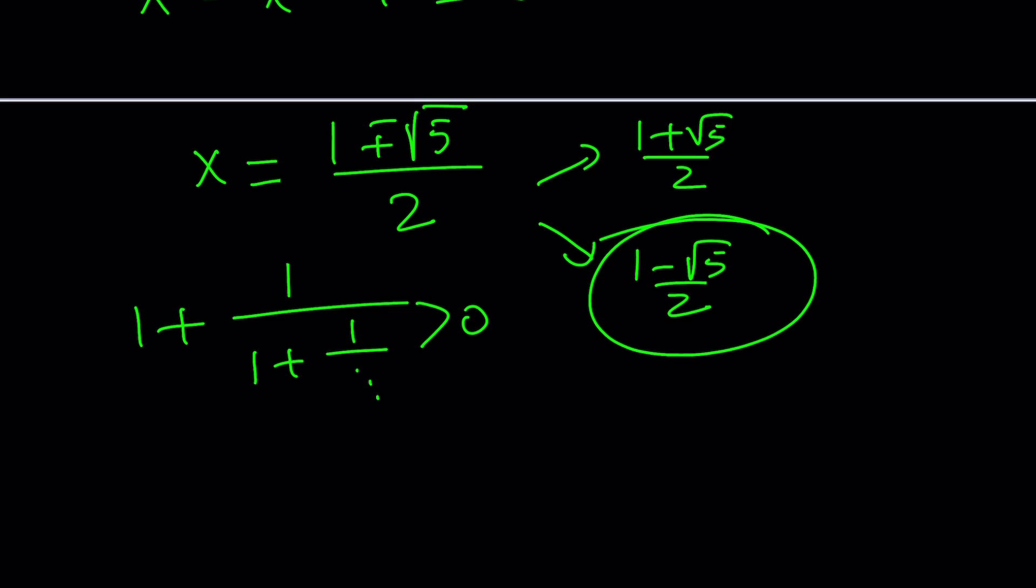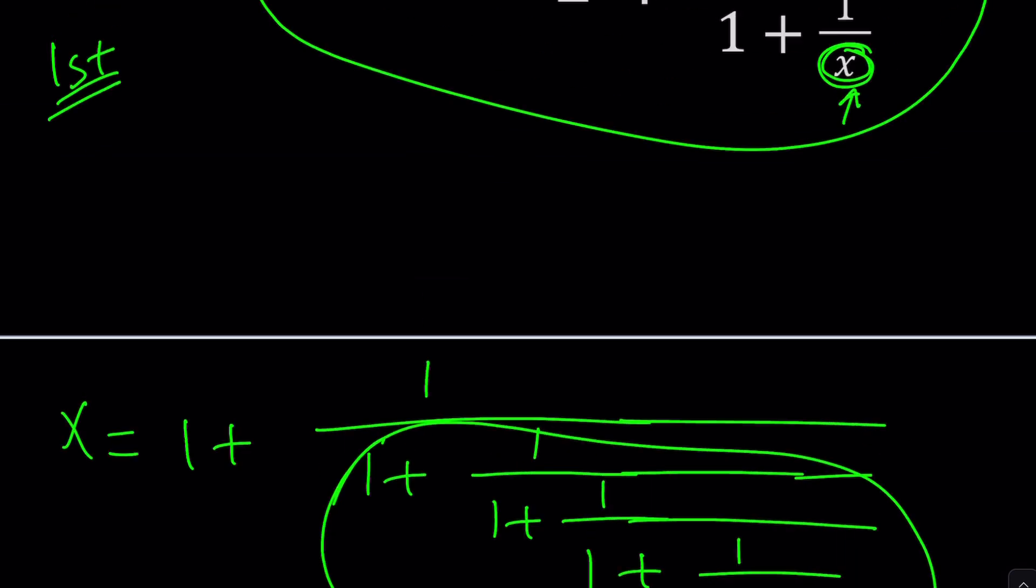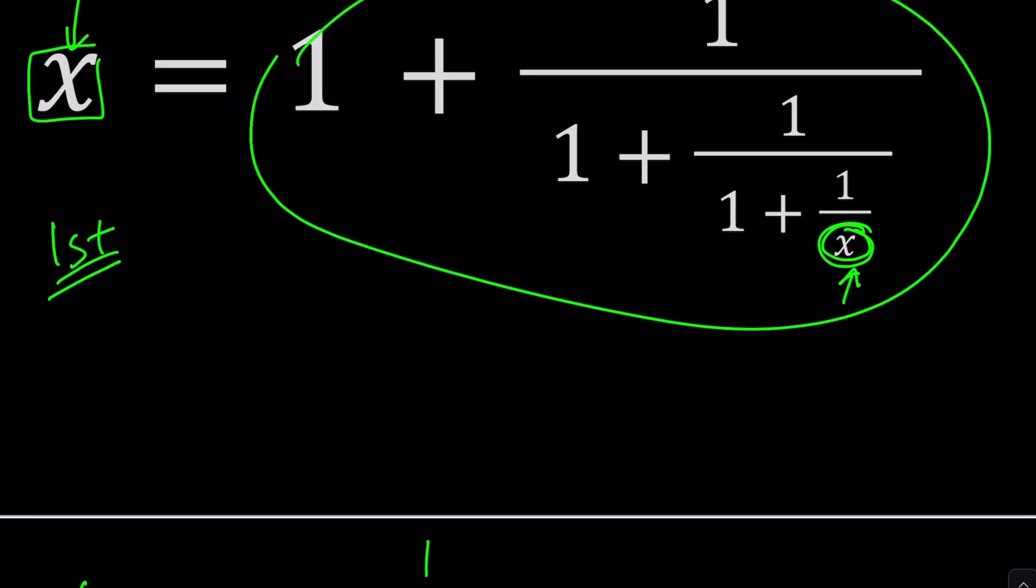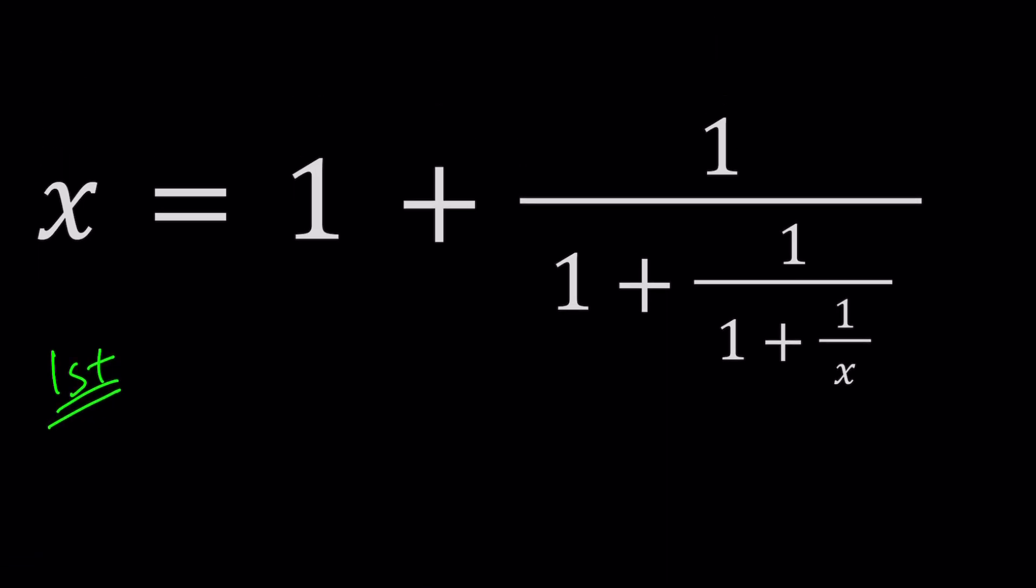The other thing to think about is the domain. If you go back to the original problem before we made any substitutions, let's clean it up. Take a look at this expression now. Can x be 0? No. So x cannot be 0.